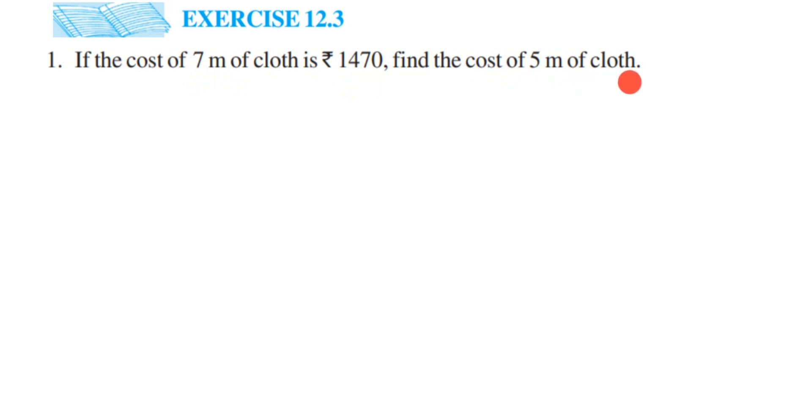Here we have to use the unitary method. We're given the cost of 7 meters of cloth, which is 1470. What we have to find out is the cost of 5 meters.